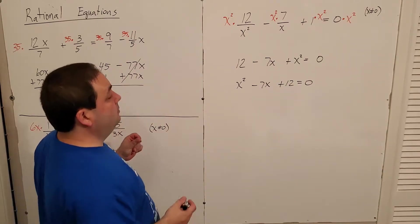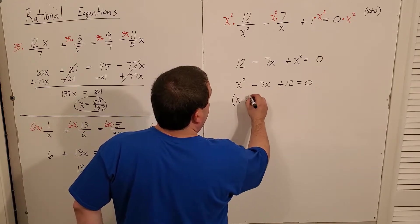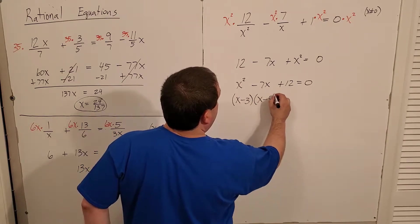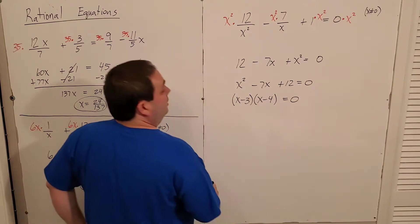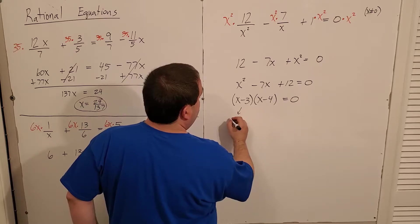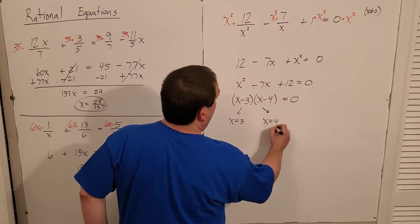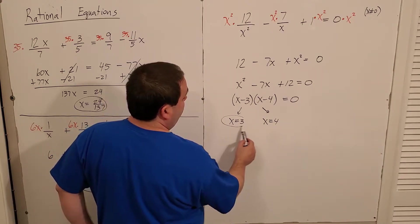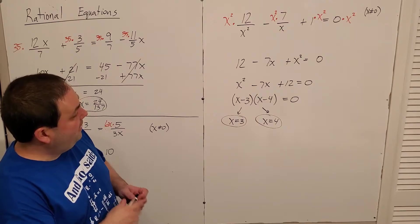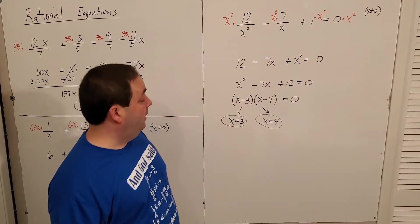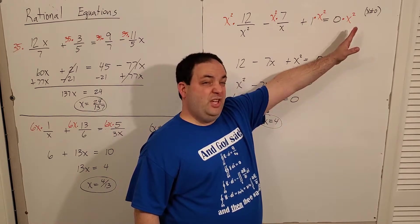And I just happened to notice that negative three and negative four add to negative seven and multiply to 12. So that means I'll get solutions of three and four. The factoring method is only quicker if you see it right away. Don't forget that. Compare the answers, right? x just can't be zero.